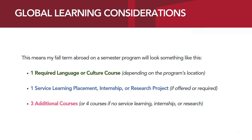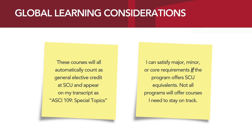My term abroad will most likely look something like this: one required language or culture course depending on the program's location; one service learning placement, internship, or research project if offered or required on the program; and three additional courses, or four if no service learning, internship, or research is available or required. These courses will all count as general elective credit at Santa Clara University and appear on my SCU transcript as ASCI 109 Special Topics unless I'm intentional about my program selection and follow the course evaluation process. I can satisfy major, minor, or core requirements if the program offers SCU equivalents.